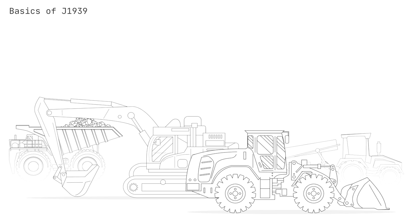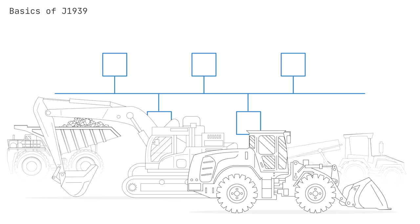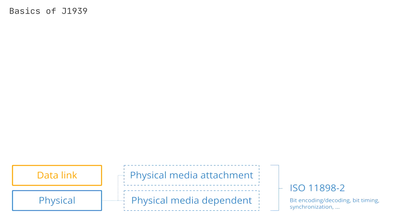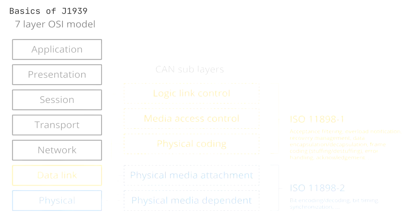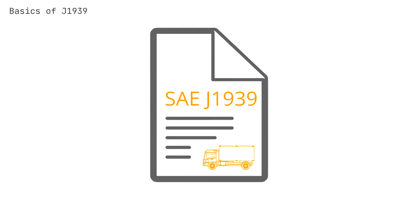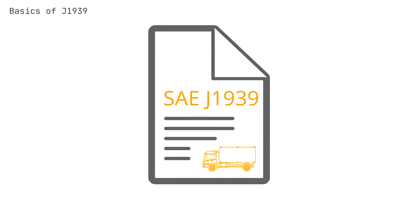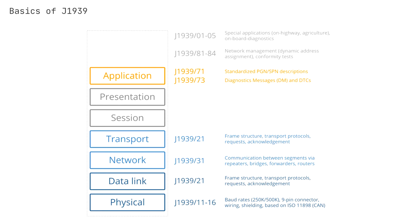In short, SAE J1939 is a set of standards that define how ECUs communicate via the CAN bus in heavy-duty vehicles. As explained in our CAN bus intro, most vehicles today use the Controller Area Network for ECU communication. However, CAN bus only provides a basis for communication, like a telephone, not a language for conversation. In most heavy-duty vehicles, this language is the SAE J1939 standard defined by the Society of Automotive Engineers. In more technical terms, J1939 provides a Higher Layer Protocol, or HLP, based on CAN as the physical layer.